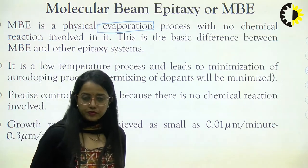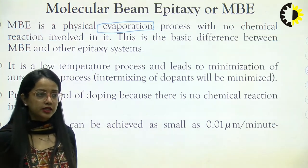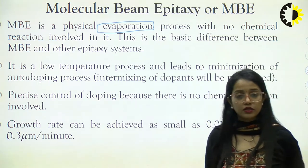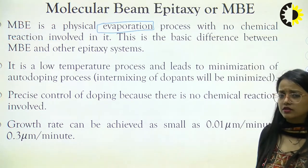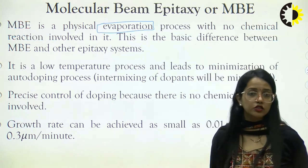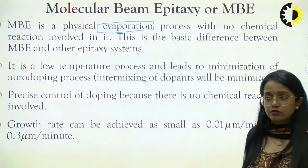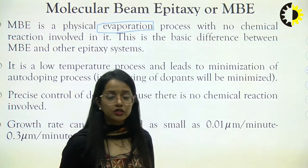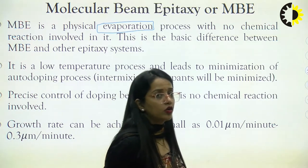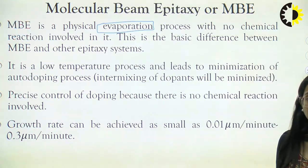We will be having a source with some raw material that has to be added on the surface. These raw materials need to be heated and they have to come out of the nozzle — we can use temperature, speed, or pressure. With any of these influences the evaporation process initiates and the chemical will settle. It is a low temperature process that leads to minimization of autodoping, where intermixing of dopants will be minimized.